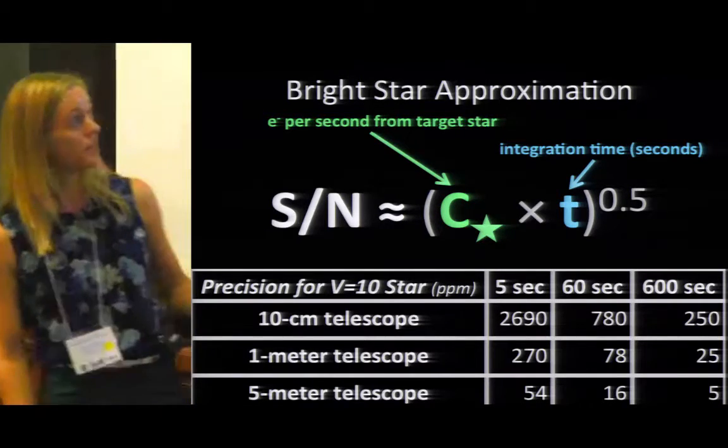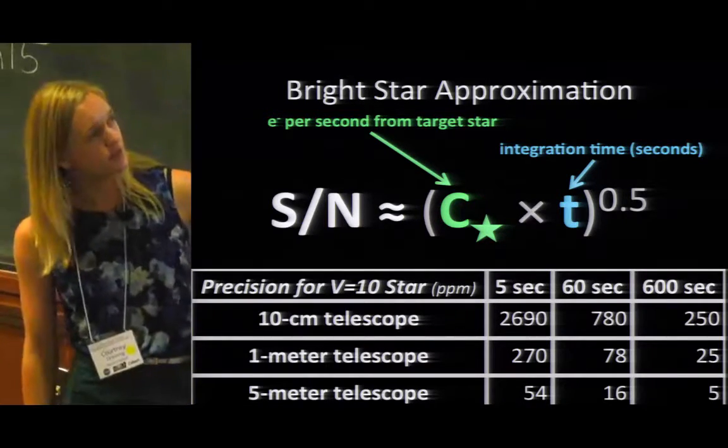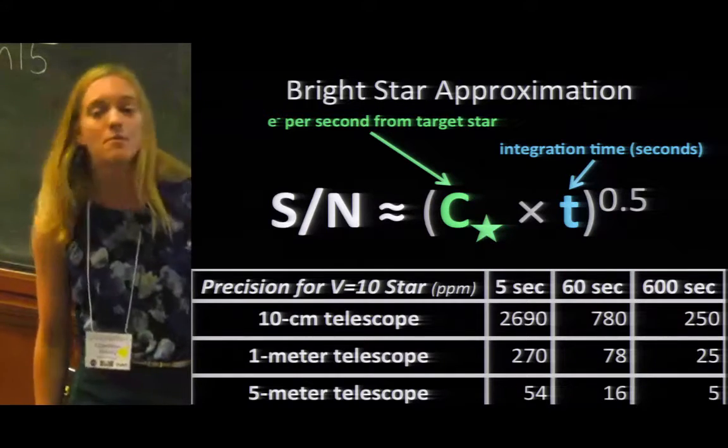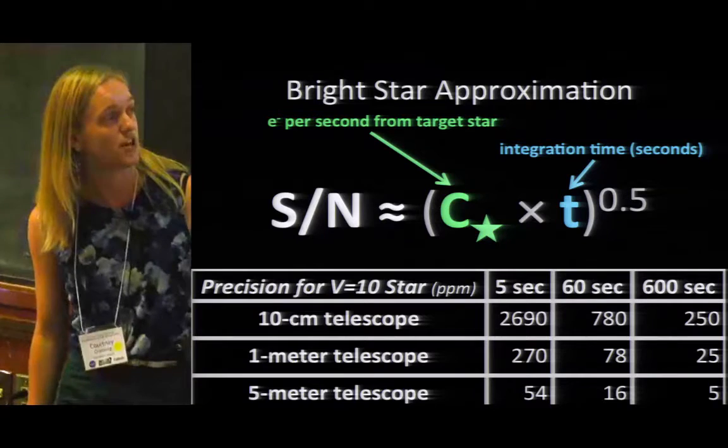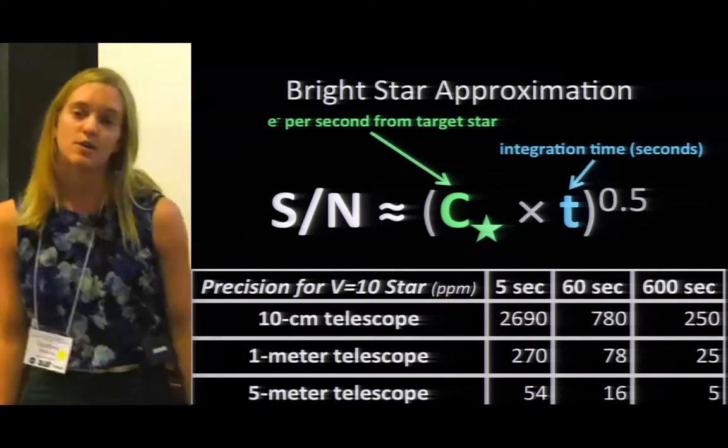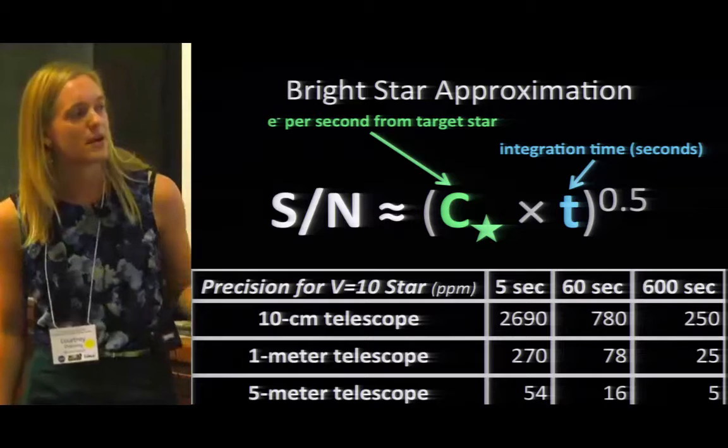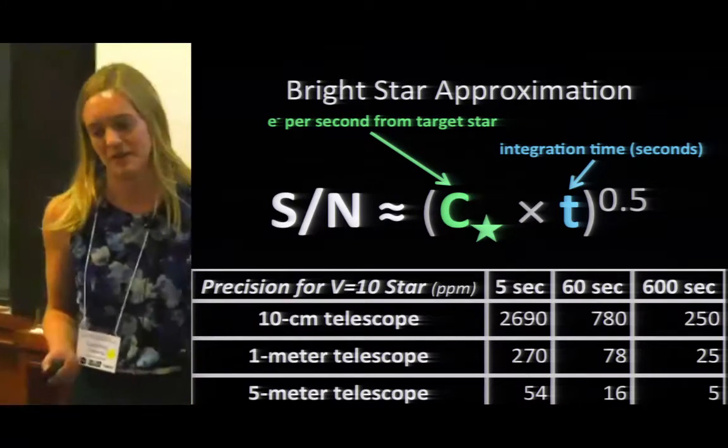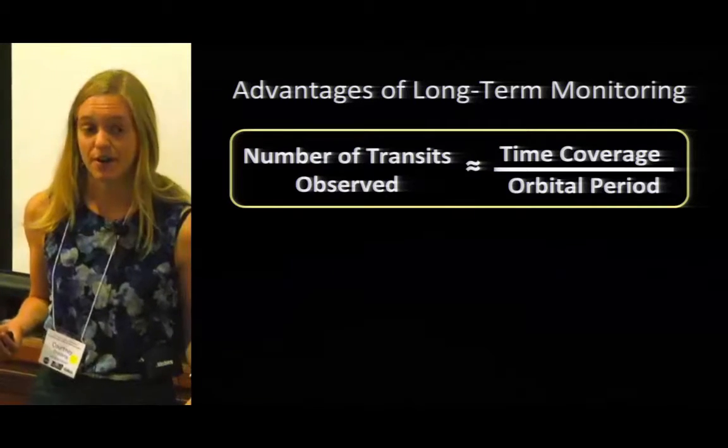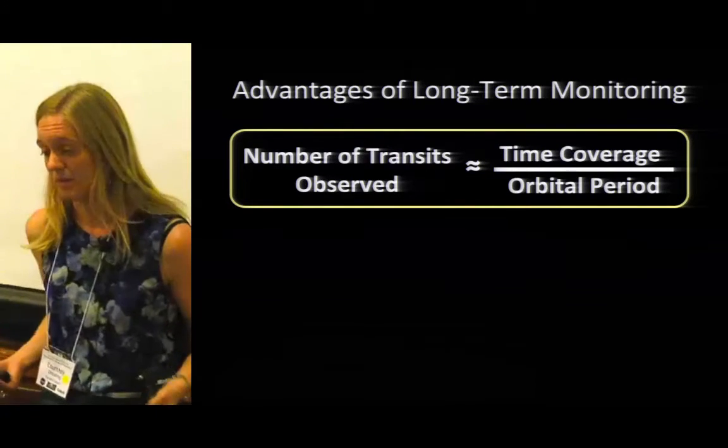So adding numbers once more, here I have different sizes of telescopes and different integration times, and we're looking at the precision we might achieve for the transit of a tenth magnitude star. And these numbers are in parts per million, so depending on our survey setup we might go anywhere from five parts per million, that'd be great, up to a couple thousand parts per million. And remember, for an Earth we're looking for 84 parts per million. Again, it's pretty small.